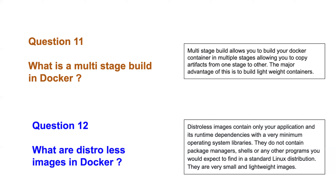If you feel those package managers are unnecessary, you can switch to distroless images. Distroless images are more lightweight than standard Docker images because they eliminate package managers entirely. They contain only your application, its dependencies, and very minimal OS libraries. Both multi-stage builds and distroless images are relatively new Docker concepts introduced in the past one to two years.